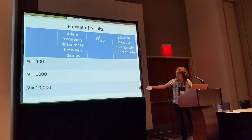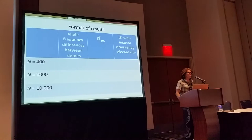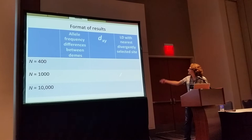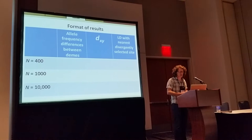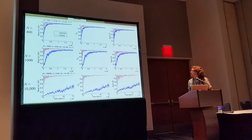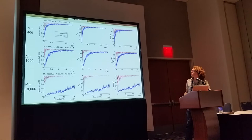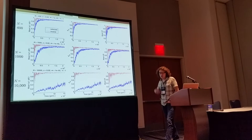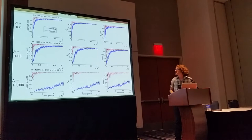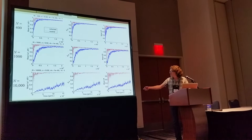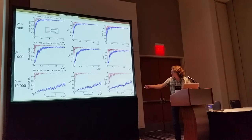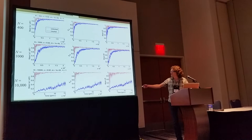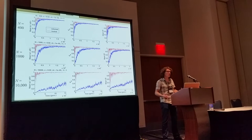As you move down the rows, population size increases: the top row has populations of just 400 total individuals, the middle row 1,000, and the bottom row 10,000. Across the columns: allele frequency differences between DEMs, DXY, and linkage disequilibrium with the nearest divergently selected neighbor. In the low gene flow case, the message is simple regardless of metric. In small populations, neutral sites are basically along for the ride the entire time, both qualitatively and quantitatively. But as we increase population size, we see very large differences in divergence metrics that persist for more than 100,000 generations.